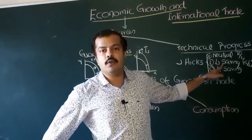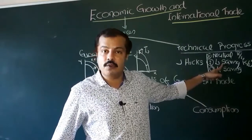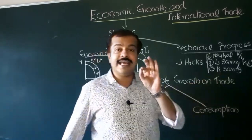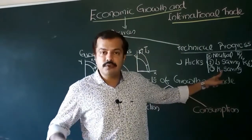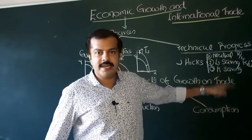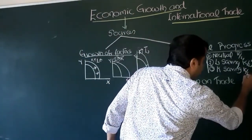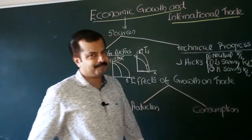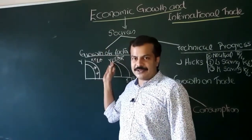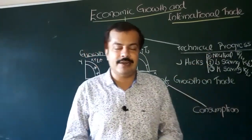When we talk about capital-saving or labor-using technical progress, the productivity of labor increases more than that of capital. Labor becomes more productive and producers will try to combine more labor along with capital. So we have seen different possibilities of growth of factors of production or improvement in technology — what we call technical or technological progress.